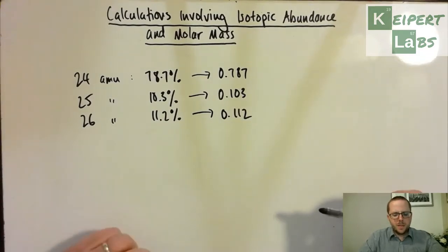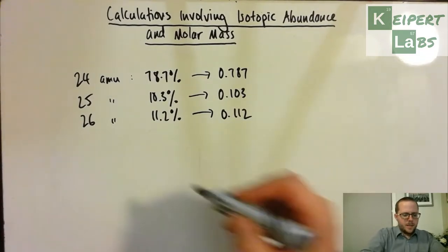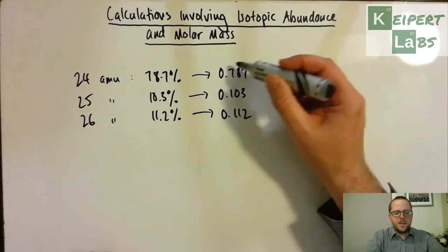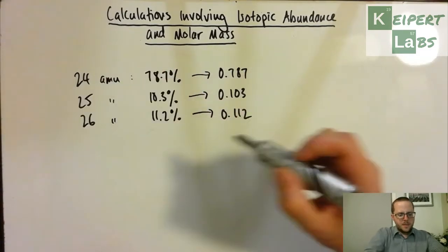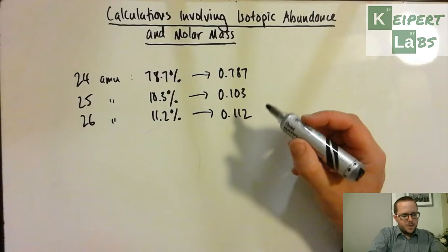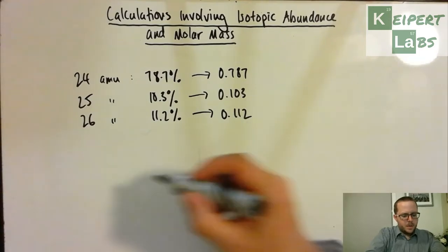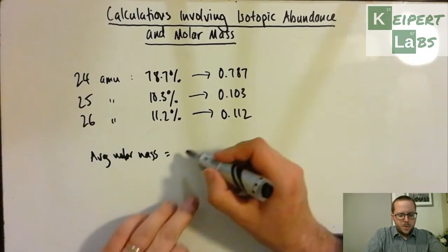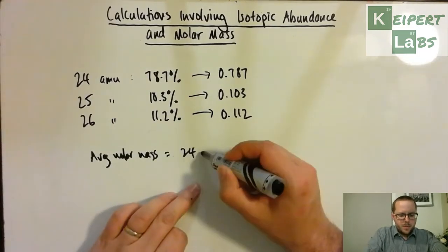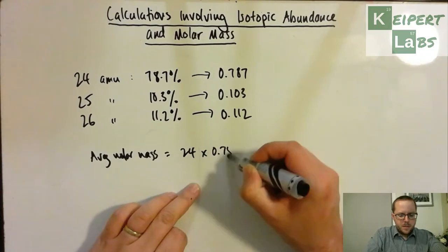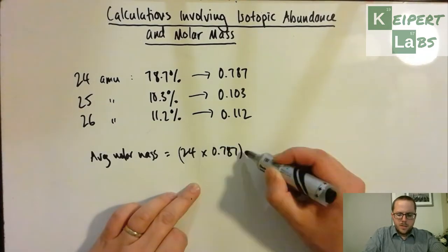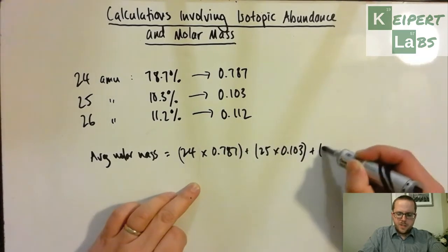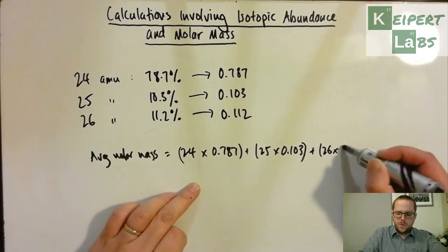And so what we're then going to do is that we're going to multiply this abundance by the number, so the average molar mass is going to be equal to 24 times 0.787 plus 25 times 0.103 plus 26 times 0.112.